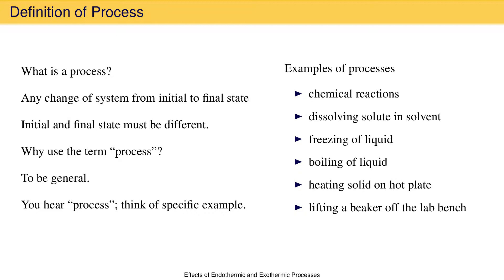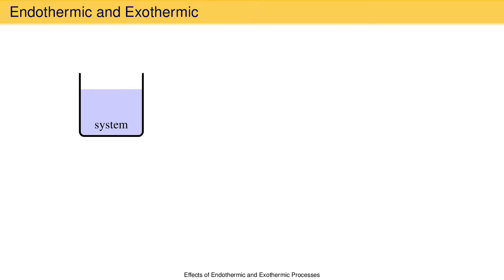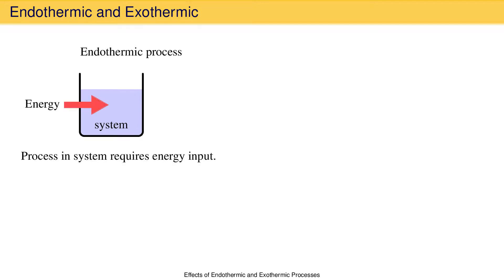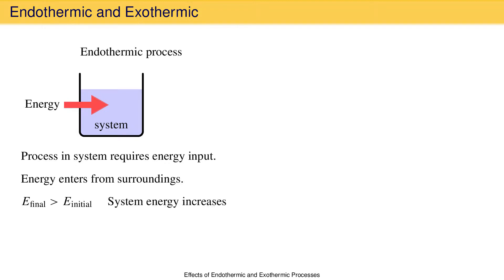Now let's talk about endothermic and exothermic processes and their effects. Let's imagine we have a system, such as the blue fluid in this beaker, in which something happens. If that something is an endothermic process, then the process in the system requires an energy input. We know that energy must come from the surroundings because of the first law. The energy input makes the final state energy of the system greater than the energy of the initial state, meaning that the system energy increases during the process. Experimentally, you will find that as the endothermic process takes place, the temperature of the system goes down, and then the temperature of the container follows suit, causing it to feel cooler to your touch.